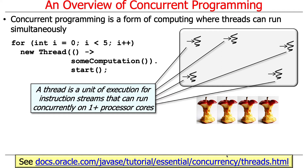Here's an example: a loop that goes for i equals zero, i less than five — we call new thread, give it some computation to run, and start the thread. We end up with five threads that will be running, and those threads will be multiplexed over the underlying processor cores. Basically, you can have multiple threads — probably more threads than cores — that are scheduled to run on them.